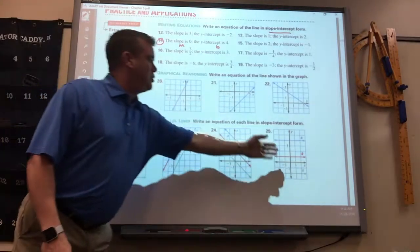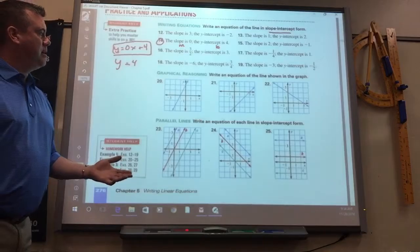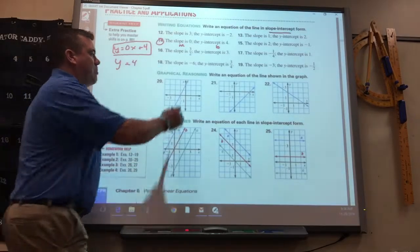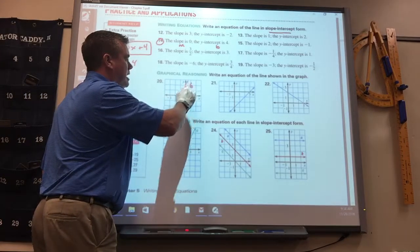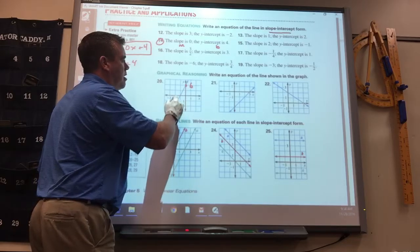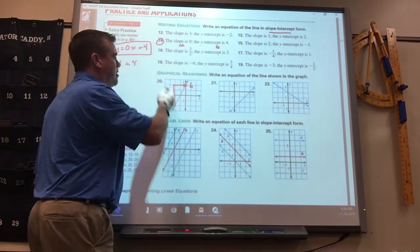So then 20 through 25, you're doing the same thing. It's just the B is where it crosses, and then you've got to find the slope, rise over run, and then you write the equation.